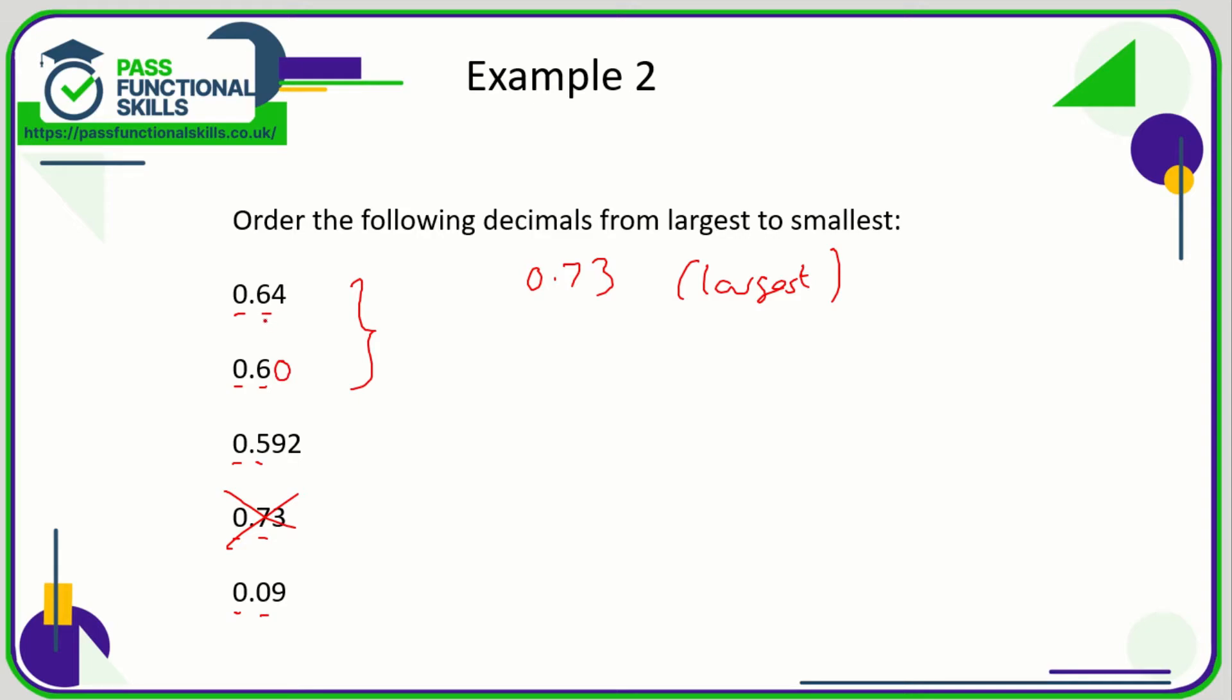We know that from the 0.6 bit we can't tell them apart, but if we look at the second decimal place, we've got a 4 and a 0. What's greater, 4 or 0? Four. So 0.64 is the next largest.